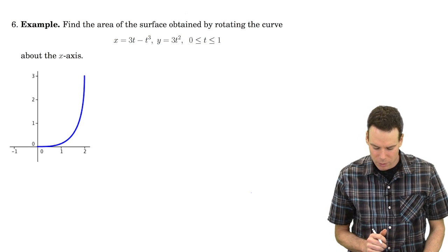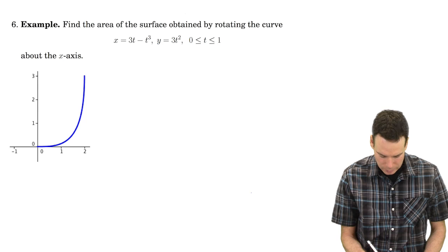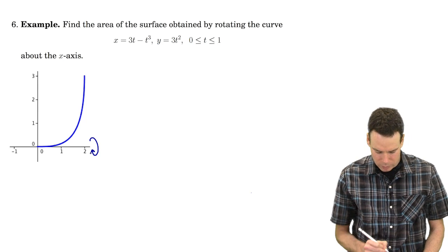Okay, in this example we're going to find the area of the surface defined by rotating this curve about the x-axis. So we're revolving about that x-axis.